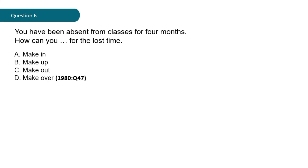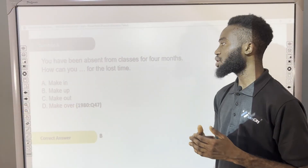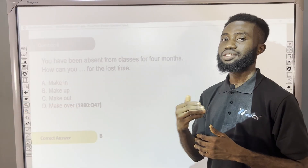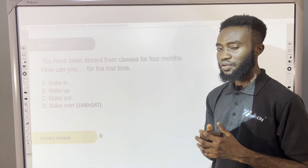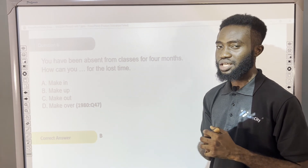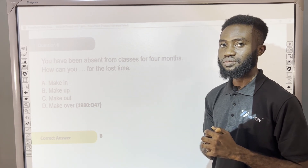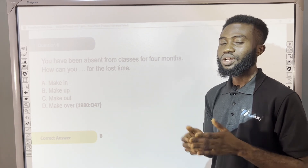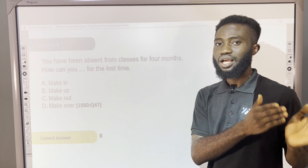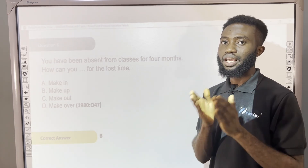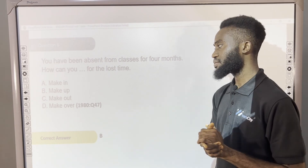The correct answer is option B — how can you make up for the lost time? To make up for the lost time is to catch up on whatever had been carried out or done in the past.